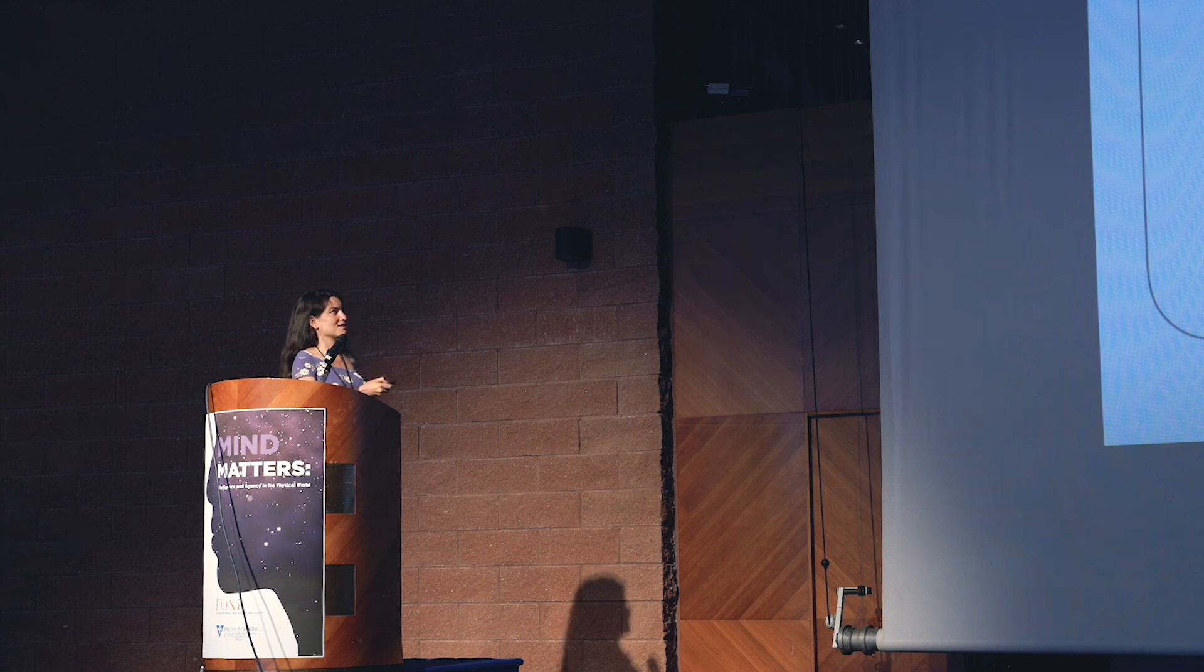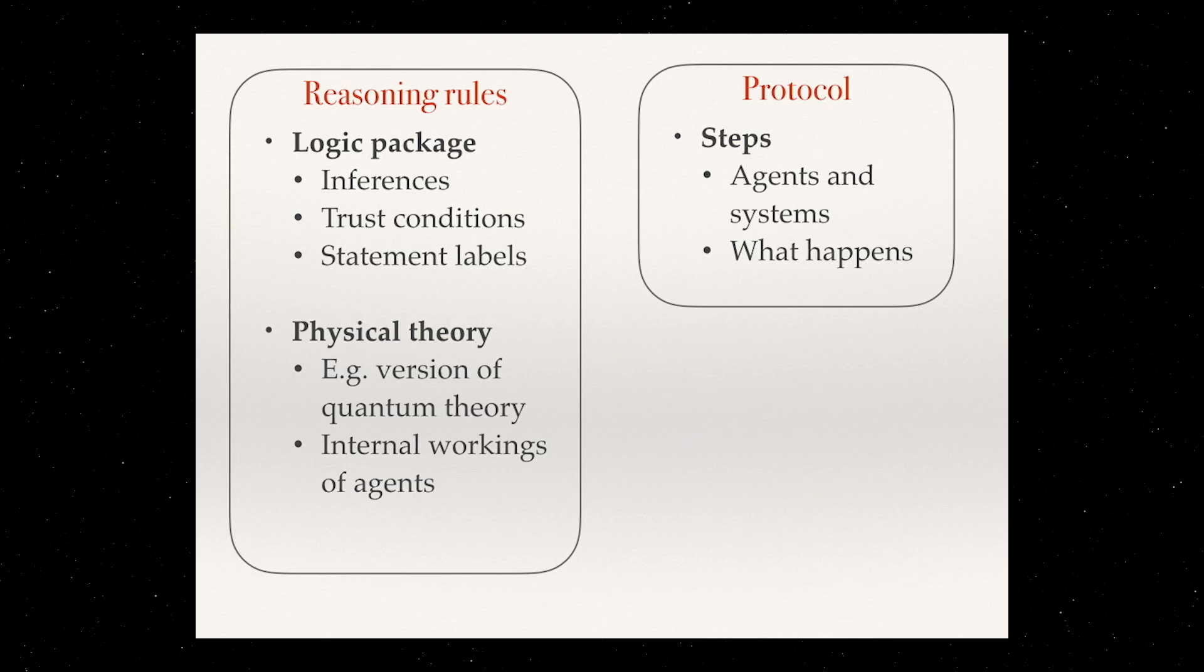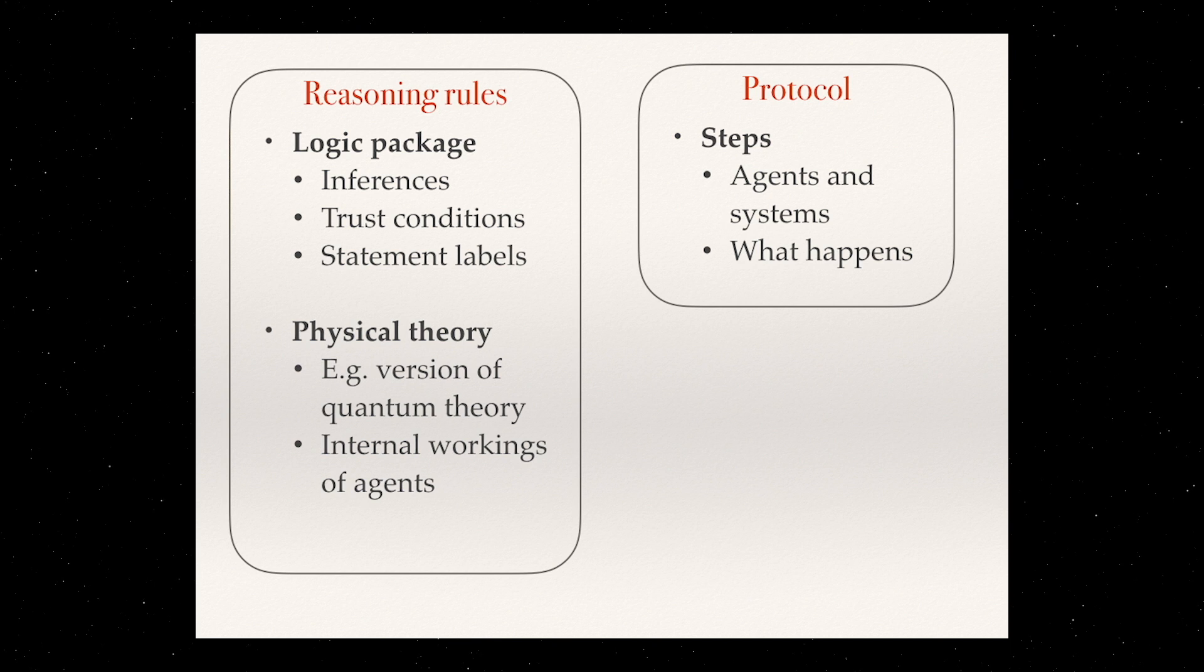Then everything that they use, like the physical theory. For example, which version of quantum theory are they using? Are they using a Copenhagen interpretation, or are they using Bohmian mechanics, which is a completely different theory, or are they using a collapse theory? And also how they see each other working.